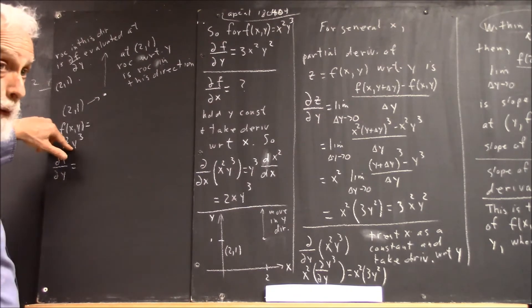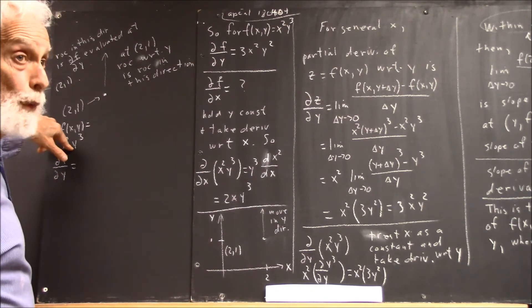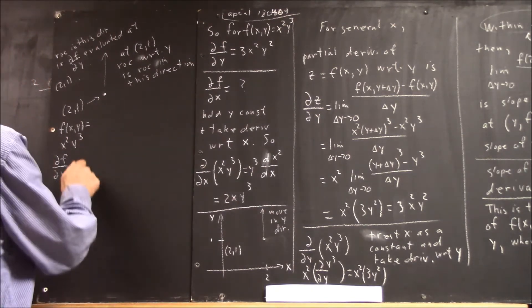Hold x constant, take the derivative with respect to y, you're going to get 3y squared, and that'll be times x squared.